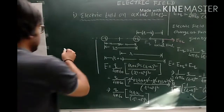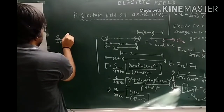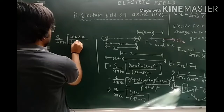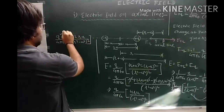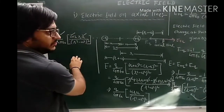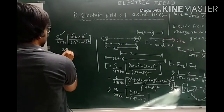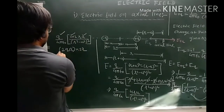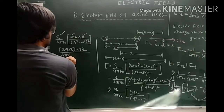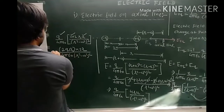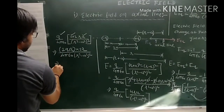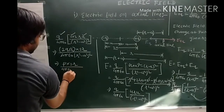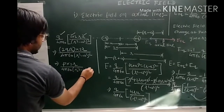Since 2QA is defined as the electric dipole moment P, we can write 2QA = P. So we get: E = 2PR / [ 4 pi epsilon naught × (R² − A²)² ]. Now we assume that point P is very far from the two charges, so the distance R from the center of the dipole is very large. Therefore we neglect A² compared to R², applying the condition R >> A.